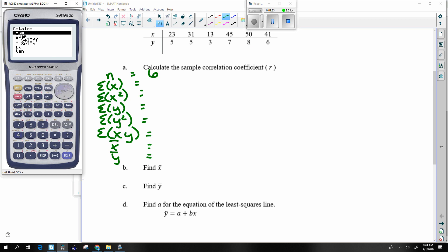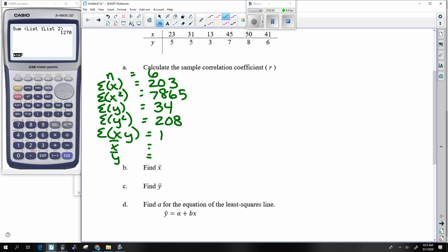So we have the sum of X, sum of X squared, sum of Y, sum of Y squared, sum of XY. X bar is the average of X, so I already added them up. That's 203 divided by the number of numbers. And the average y, so that's 34 over 6. Okay, so that is the Christmas tree.